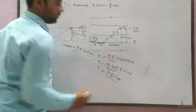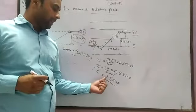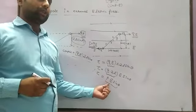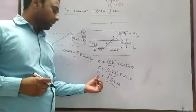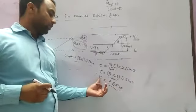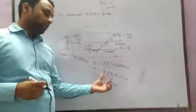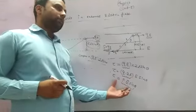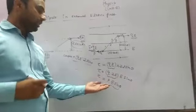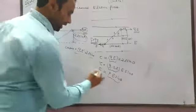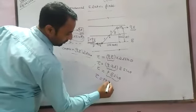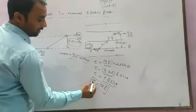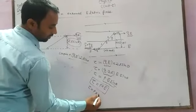Since sin theta appears here, this means the electric dipole P and electric field E are in a cross product. Torque is a vector quantity, having both magnitude and direction. Therefore, torque should be written as P cross E — in vector form, tau is equal to P cross E.